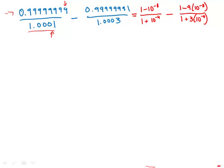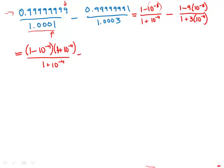Now notice that ten to the negative eighth is a square — it's ten to the negative fourth squared. So that means we can use the difference of two squares formula. That gives us one minus ten to the negative fourth times one plus ten to the negative fourth, all over one plus ten to the negative fourth. The second fraction stays the same: one minus nine times ten to the negative eighth over one plus three times ten to the negative fourth.